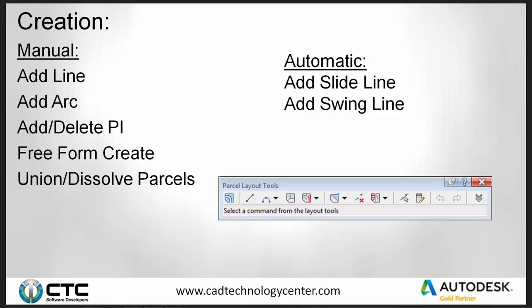For creating parcels manually, there are tools to add arc or add line, add or delete a PI (point of intersection), a freeform create, and union and dissolve parcels. On the automatic side there are basically two options: add slide line and add swing line.